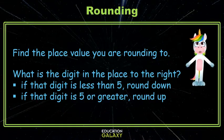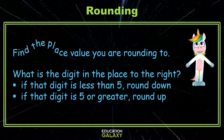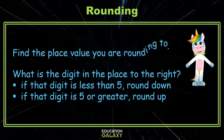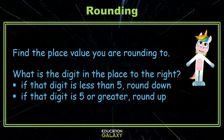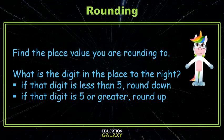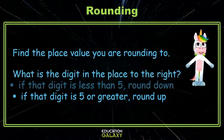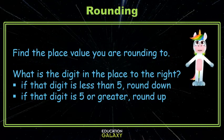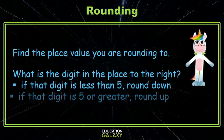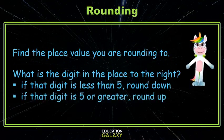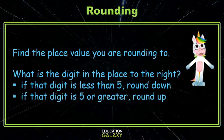First, find the place value you're rounding to. Then ask yourself, what digit is in the place to the right? If that digit is less than 5, round down. If that digit is 5 or greater, round up. Let's look at an example.